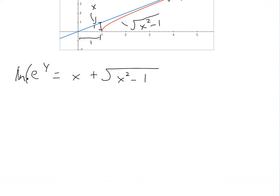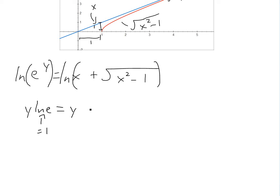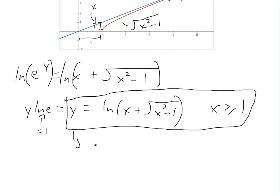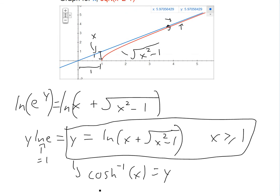Now that we have e^y equals x plus square root of (x² minus 1), we take the natural log of both sides. Using log properties, ln(e^y) equals y times ln(e) equals y times 1 equals y. So y equals ln of (x plus square root of (x² minus 1)), with domain x greater than or equal to 1. This completes our proof that inverse hyperbolic cosine of x can be written as a logarithm.